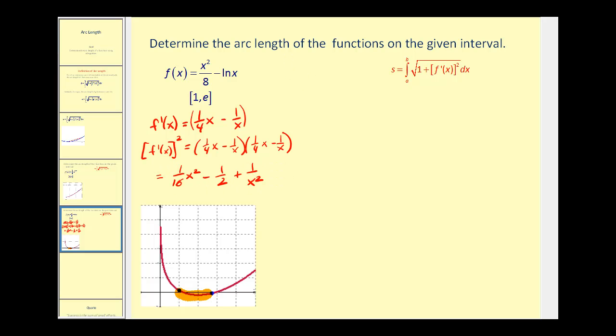Let's go ahead and apply the arc length formula. Our interval is from one to e. And we'll have the square root of one plus the derivative squared, which we just found as one-sixteenth x squared minus one-half plus one over x squared.